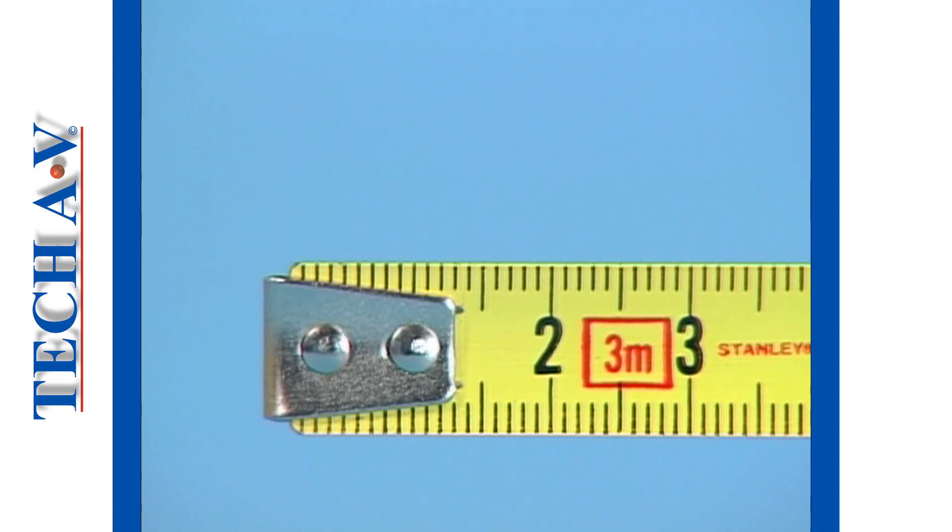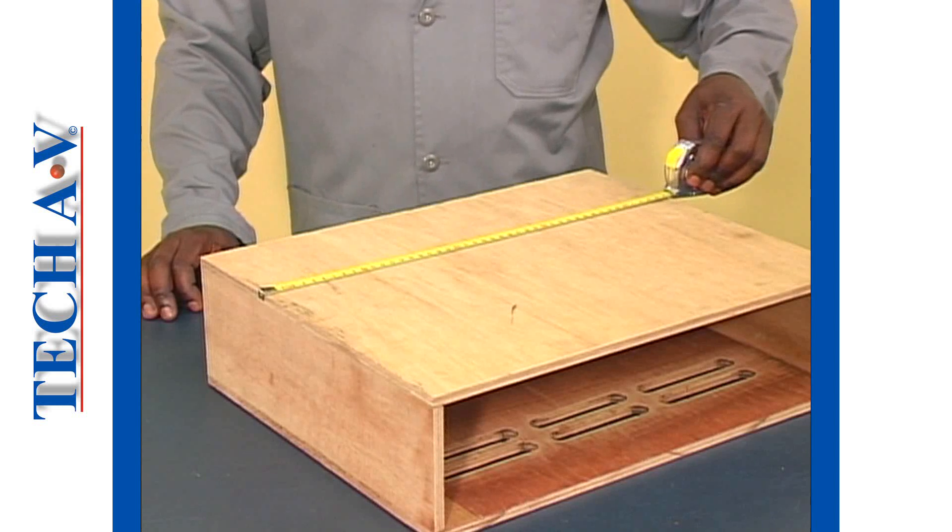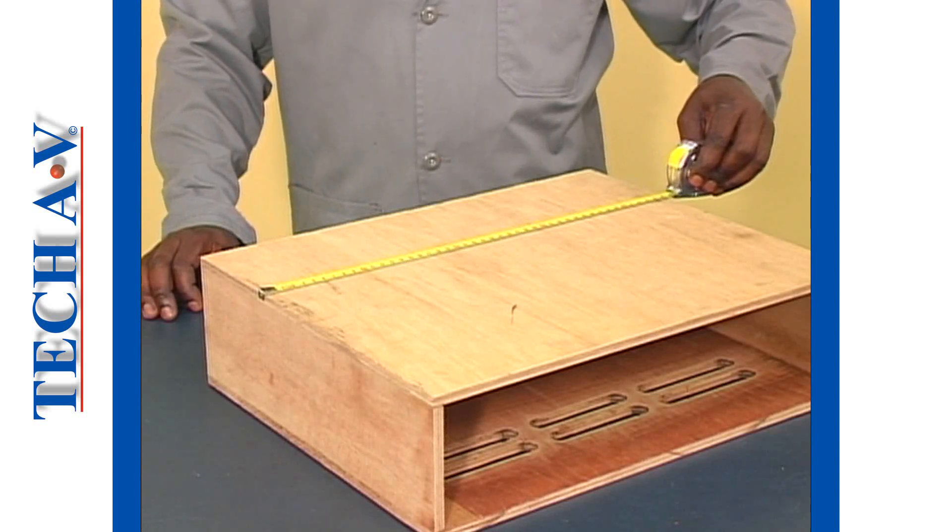The hook can be placed over the end of whatever we want to measure and the tape pulled out until it reaches the other end of our work.